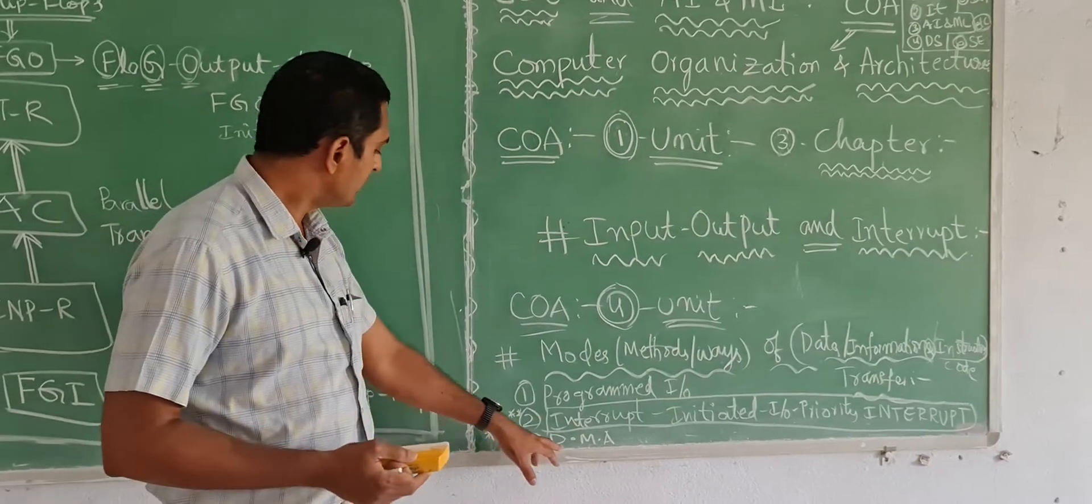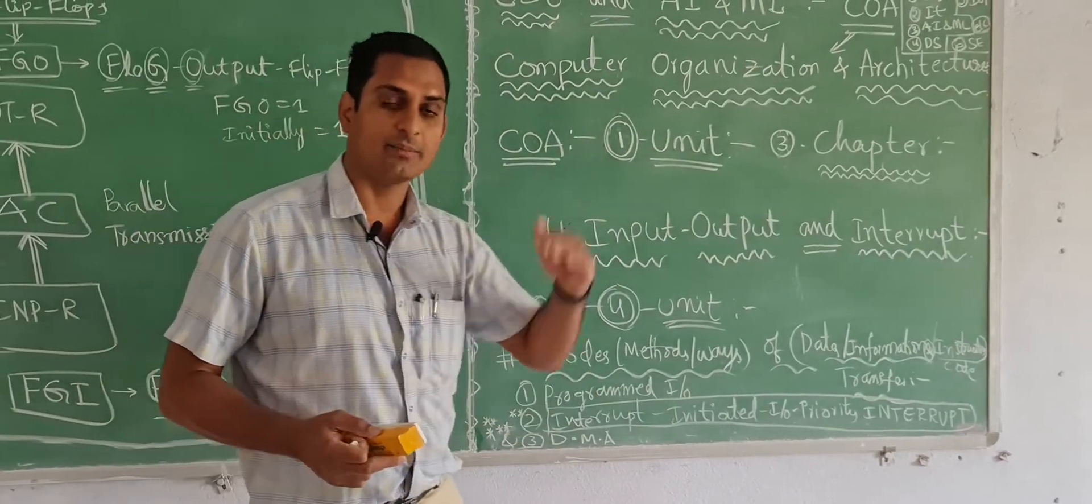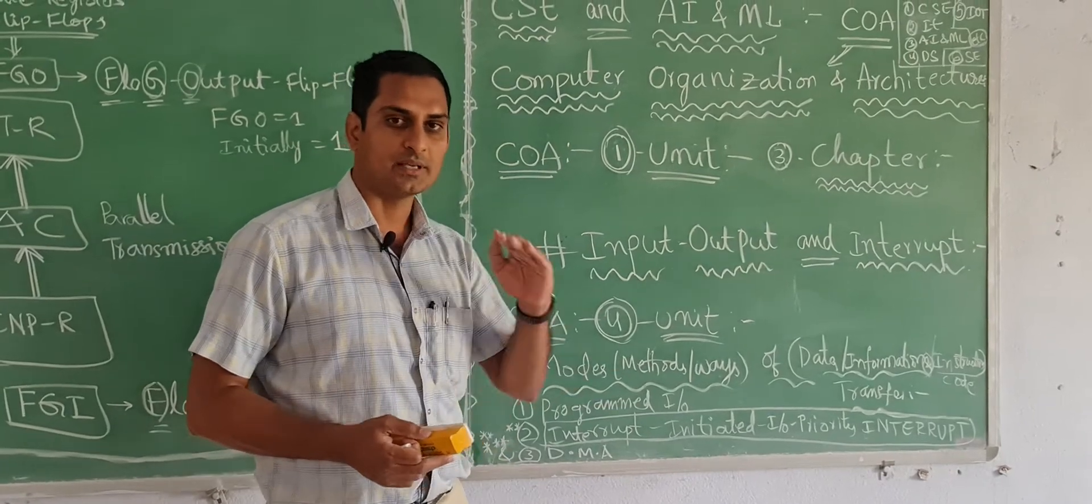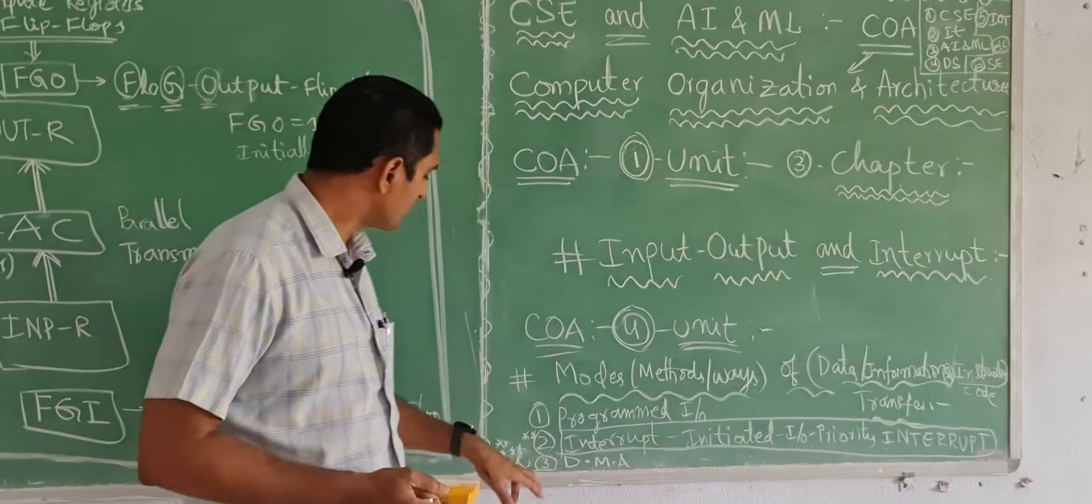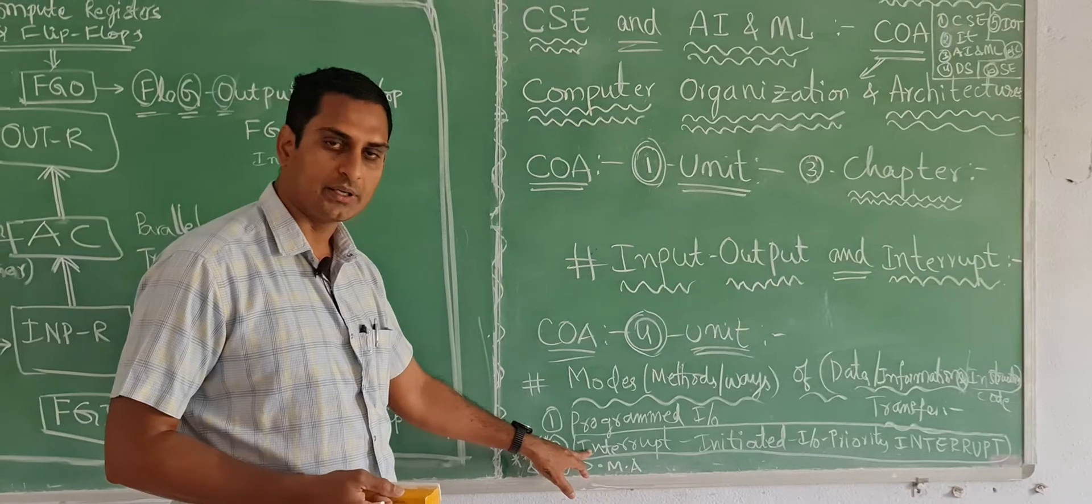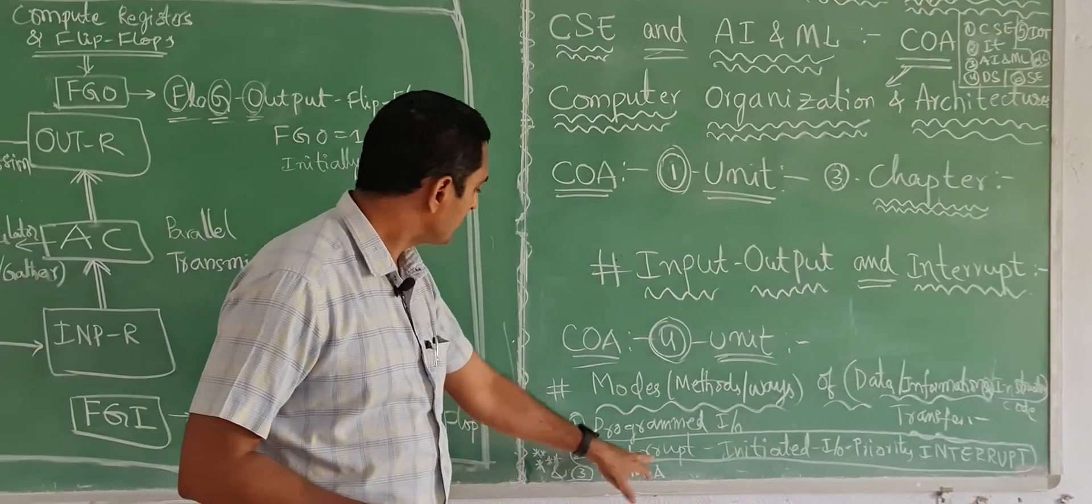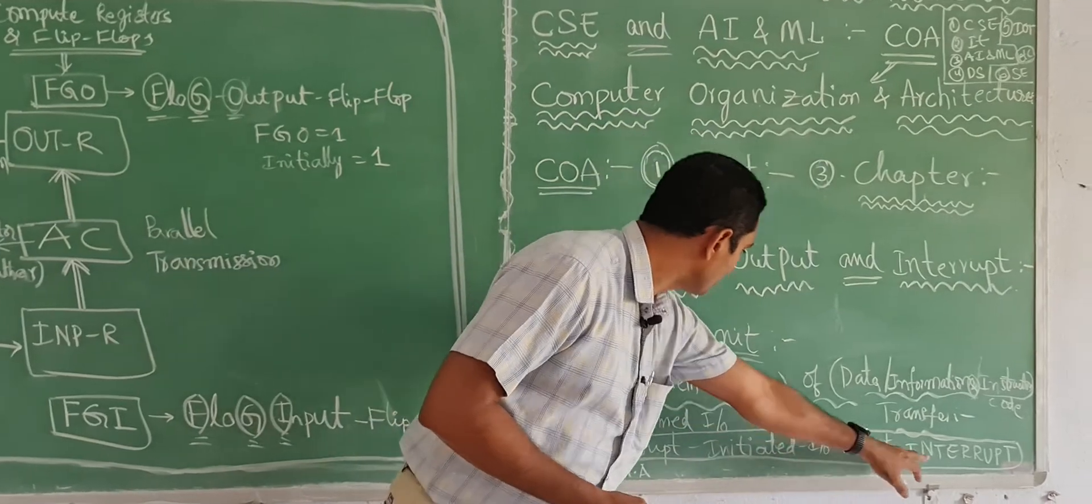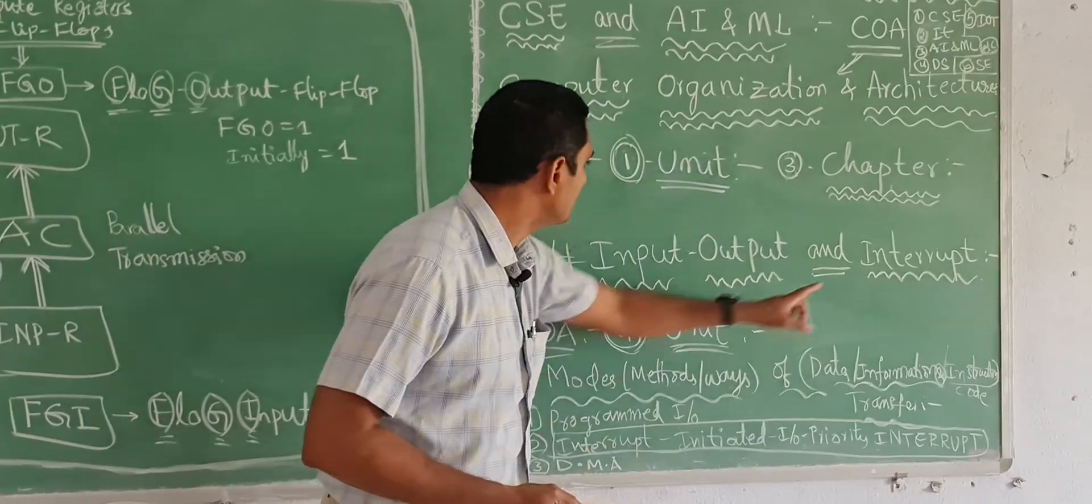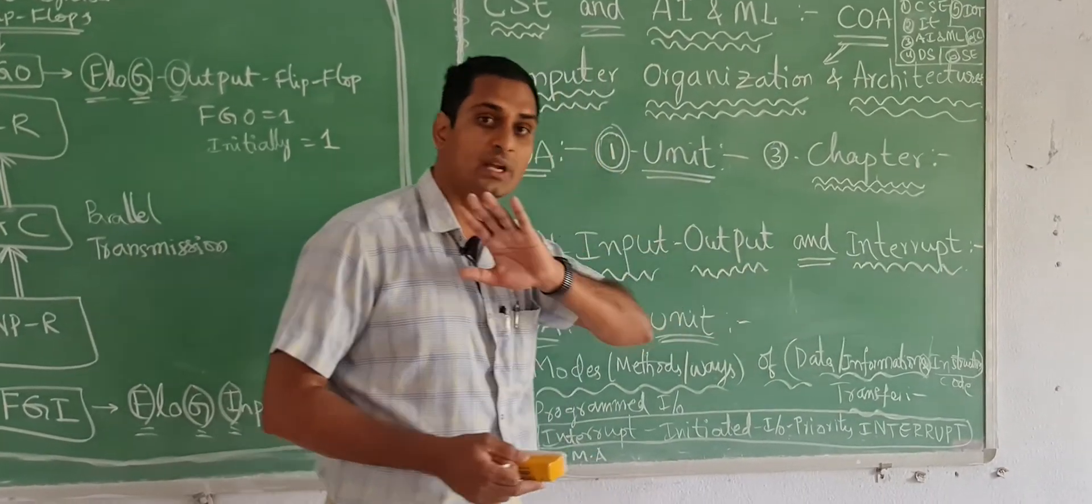And here DMA, DMA means direct memory access, that is very very important, 5 stars. This is also very very important. The thing is why I am doing revision is interrupt, interrupt here the topic is also interrupt, so do not get confused.